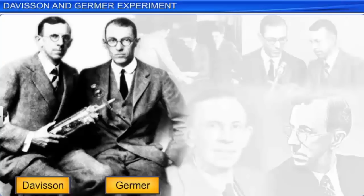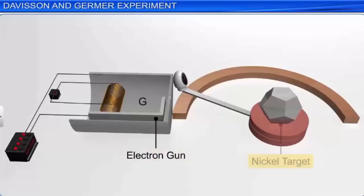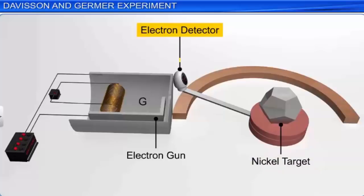The experimental discovery of diffraction of electrons by crystals by Davisson and Germer established the wave nature of electrons. Here is a similar setup to the experiment conducted by Davisson and Germer. The setup is placed in an evacuated chamber. It consists of an electron gun G, a nickel target, and an electron detector that is capable of moving on a circular scale.